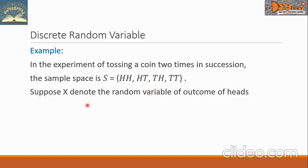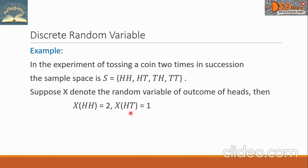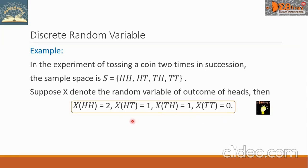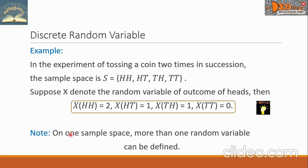Suppose X denotes the random variable of outcome of heads. So we write X(HH) = 2, X(HT) = 1, X(TT) = 0. Take note that on one sample space, more than one random variable can be defined.